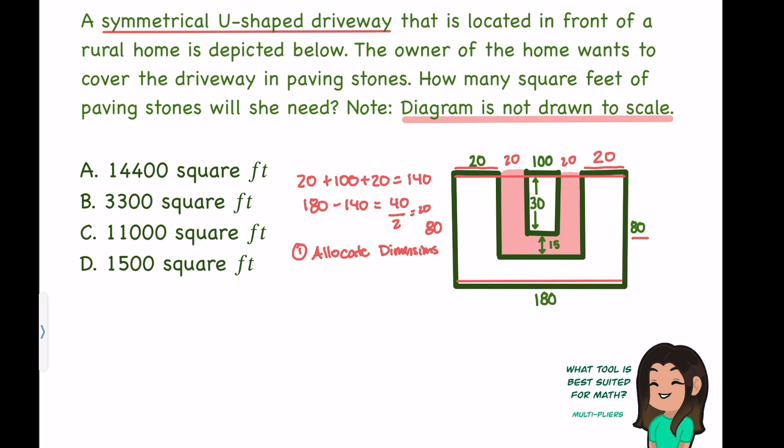We have one last dimension to find, and that's the dimension right here, this inner part of our rectangle on the inside. If I know that this part equals 30 and this part equals 15, then all together, that part must equal 30 plus 15, or 45. The side of the innermost rectangle is going to be 45.